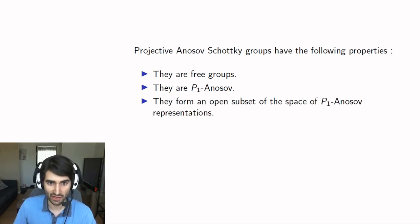The Anosov Schottky groups, as defined here, form an open subset of the space of P1 Anosov representations. It's fairly easy to see because you can actually use the same convex set if you just deform the representation a tiny bit, and they will still satisfy this open condition of being contained in each one's opposite or dual subset.